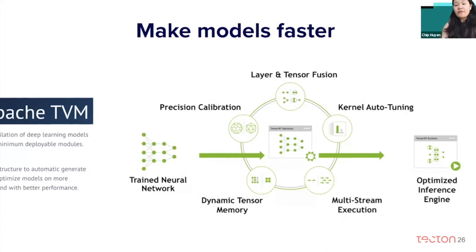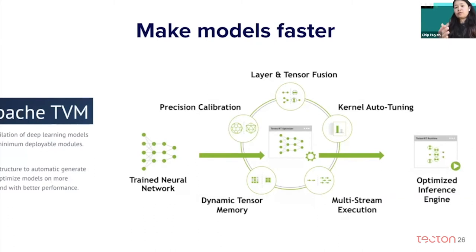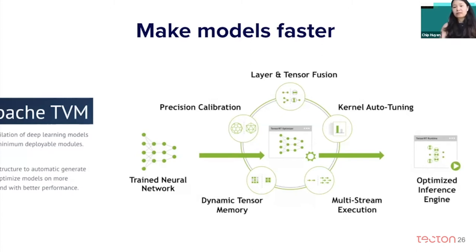To make models faster, there have been many exciting approaches. You can fuse operations together, write specific kernels for certain operations, do dynamic tensor memory management, or compile models to optimize execution on certain hardware. Two of my favorite solutions are Apache TVM and TensorRT. Feel free to check them out — they're really awesome.